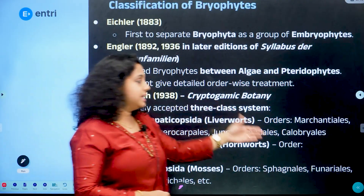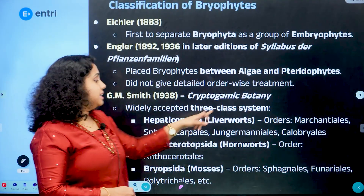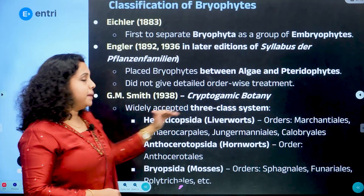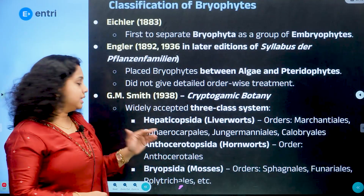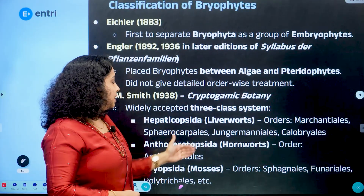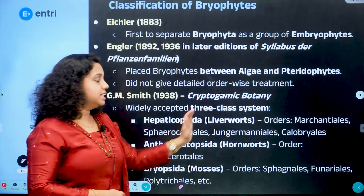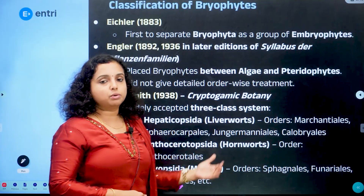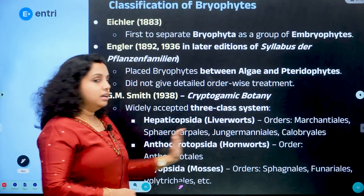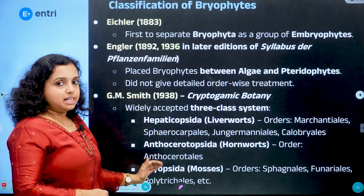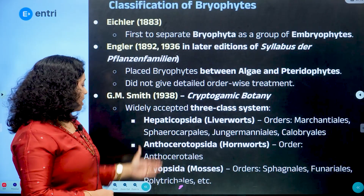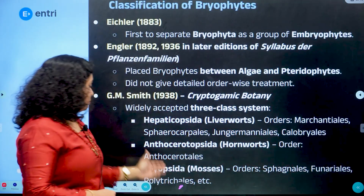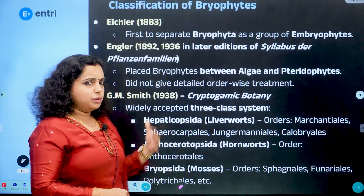G.M. Smith recognized four orders under Hepaticopsida: Marchantiales, Sphaerocarpales, Jungermanniales, and Calobryales. The second class is Anthocerotopsida, the hornworts, which has a single order — Anthocerotales. The third class is Bryopsida, with orders including Sphagnales, Funariales, and Polytrichales.